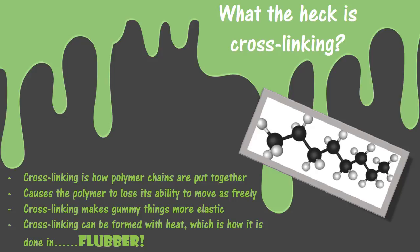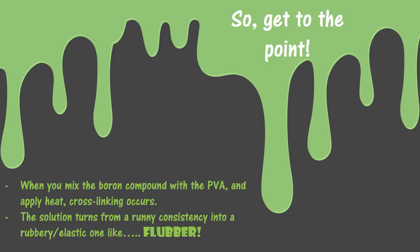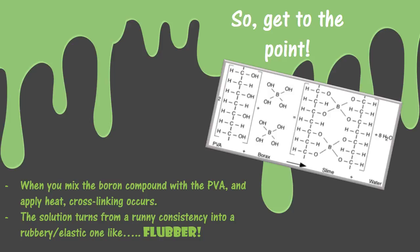This is an image of cross-linking molecules. The point is flubber — let's be honest. When you mix the boron compound, the borax, with the PVA adhesive and apply heat, the cross-linking happens. As we mix it and mix it, it's going to turn into something that resembles flubber. This is just a representation of the cross-linking that occurs — once you add your PVA to your borax and heat it up, you get the cross-linking of the slime.